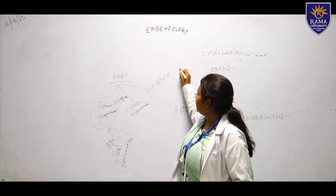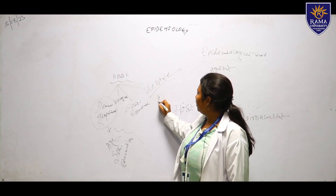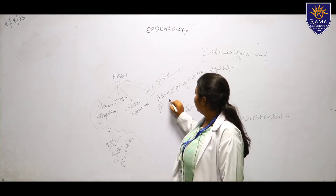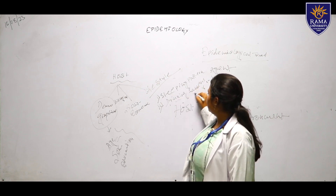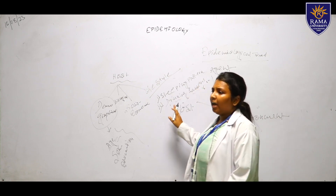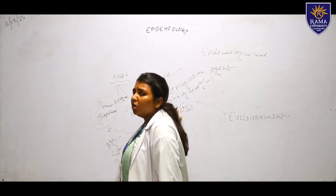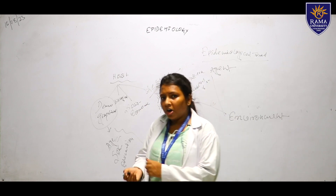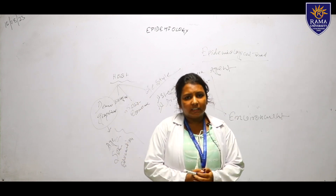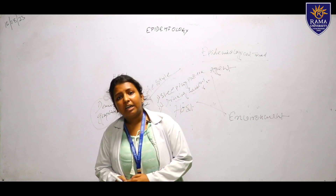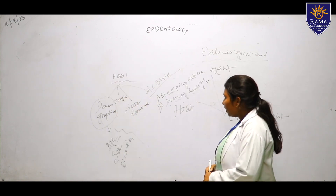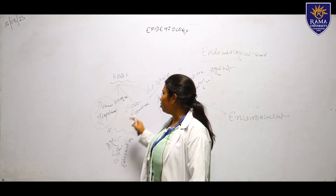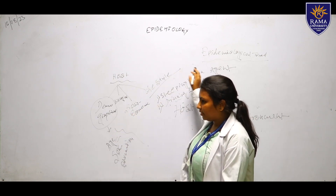Lifestyle also plays a great role — first is sleeping pattern, then drinking habits. If a person is alcoholic, that is a risk factor for many types of diseases. So the host factors are: demographical, biological, socio-economic, and lifestyle host.